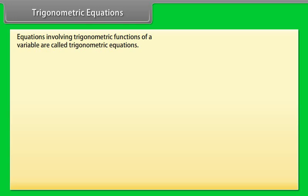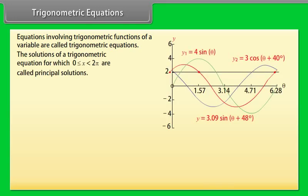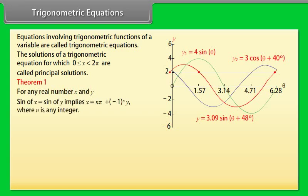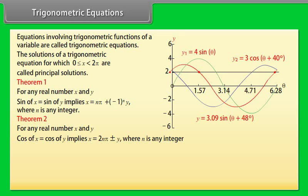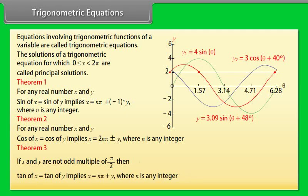Trigonometric equations are equations involving trigonometric functions of a variable. The solutions for which 0 ≤ x < 2π are called principal solutions. Theorem 1: sin x = sin y implies x = nπ ± (−1)ⁿy, n ∈ ℤ. Theorem 2: cos x = cos y implies x = 2nπ ± y, n ∈ ℤ. Theorem 3: If x and y are not odd multiples of π/2, then tan x = tan y implies x = nπ + y, n ∈ ℤ.